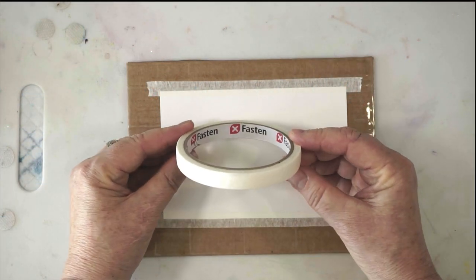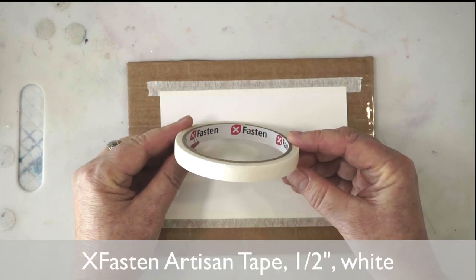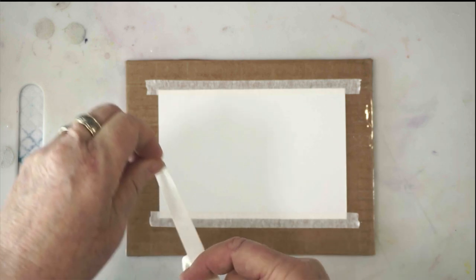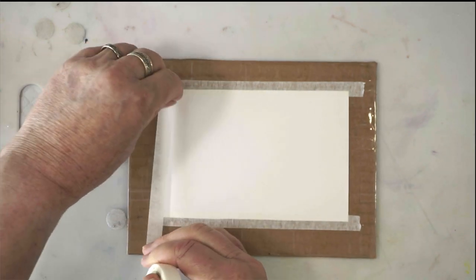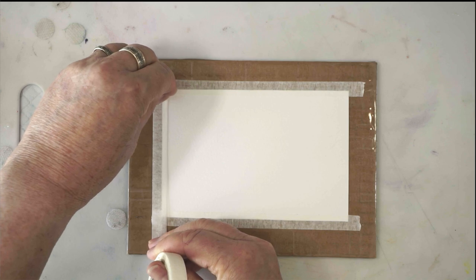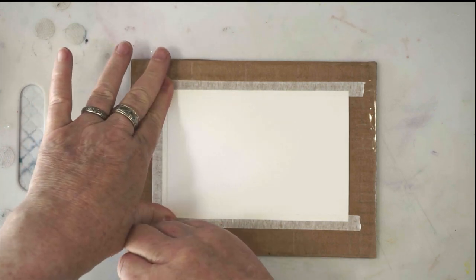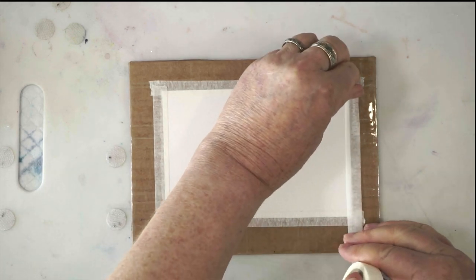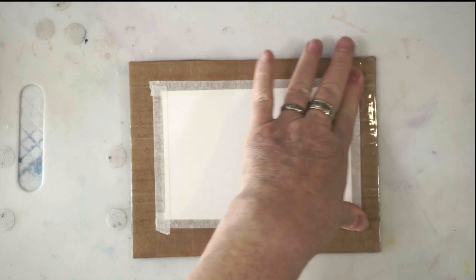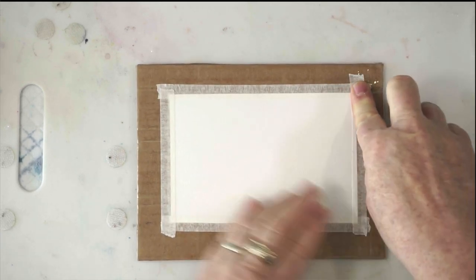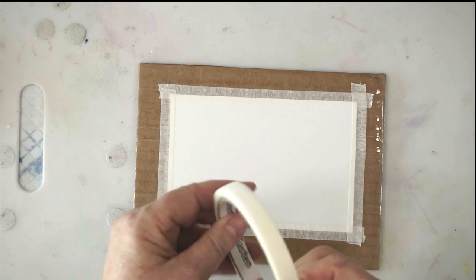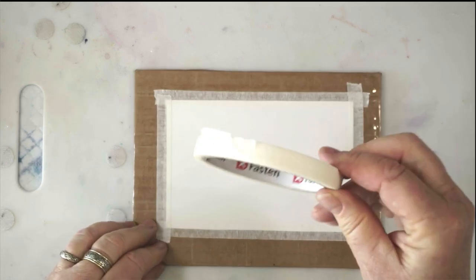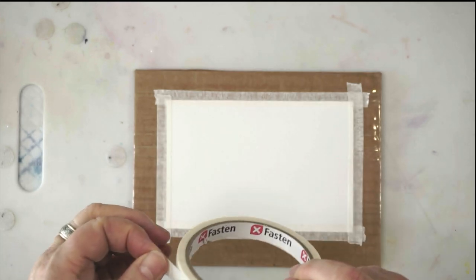So the tape that I'm using is X-Fasten Artisan Tape, half-inch width in white, and please don't send me emails asking me to tell you where to buy it in your part of the world. If you search from where you are, you'll get local results a lot more easily than I will. So please do your own search to find out where or if you can buy it in your part of the world.